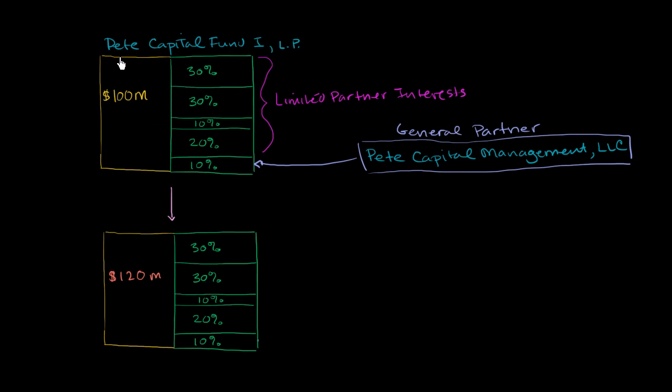So this is the hedge fund that Pete set up. We'll call it Pete Capital Fund 1. He's maybe in the future going to start Fund 2 and Fund 3 and all of the rest. And he's able to raise $100 million.